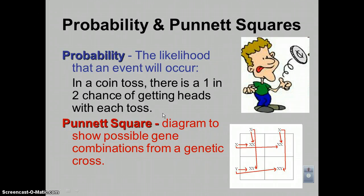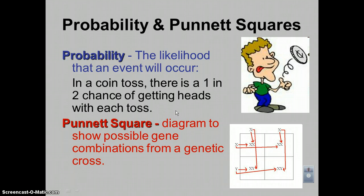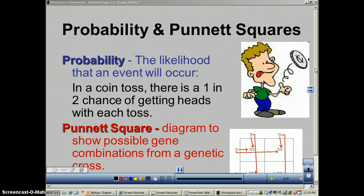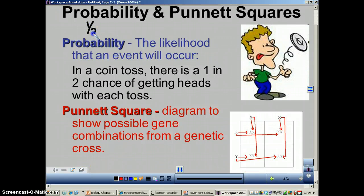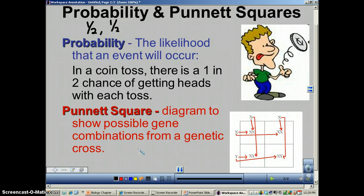The law of segregation is helping you determine which alleles go to which gamete. Remember, a gamete is simply a reproductive or sex cell. Once we have the law of segregation mastered, we can deal with probability and Punnett squares. Probability is a term from math — it's just the likelihood that an event will occur. The classic case is flipping a coin: there's a one in two chance of getting heads after each toss, which is 50%. You can use a Punnett square to work out different combinations.